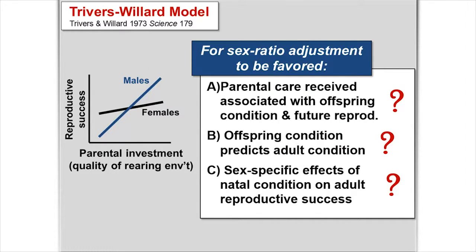This hypothesis — the Trivers-Willard model — has been around for a while, published in Science and made a big splash. But there are important assumptions underlying it that ought to be met if selection is actually going to favor this behavior, and many of these have gone largely untested. These include: that parental care is positively associated with offspring condition and probability of future reproduction; that offspring condition predicts adult condition; and critically, that there are sex-specific effects of natal environmental conditions on offspring reproductive success — an interaction between offspring sex, the rearing environment, and their effect on offspring reproductive value.